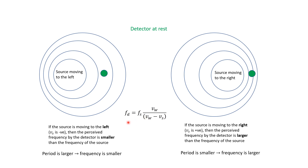Remember, the numbers like 10 over 10 plus 1 were just used to get an idea of whether the factor is bigger or smaller than one. In reality, the speed of sound in air is about 331 meters per second.